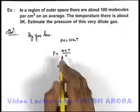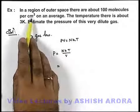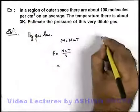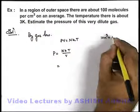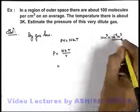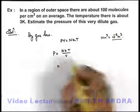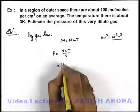If we substitute the value for 1 centimeter cube volume, 1 centimeter cube volume is 10 to power minus 6 meter cube volume. In this volume there are 100 molecules, so we take number of molecules to be 100.